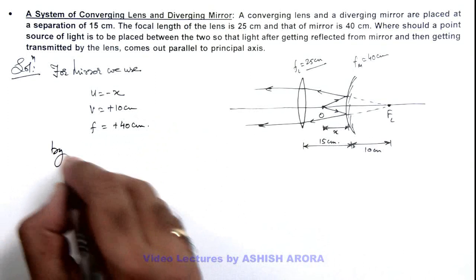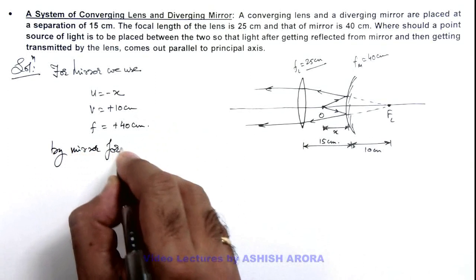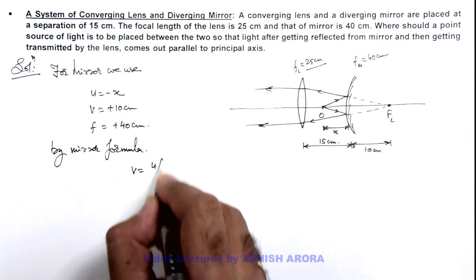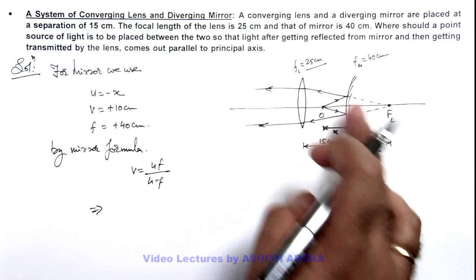Then here we can write by mirror formula, we can use v equals u f divided by u minus f. This implies the value of v we already know.